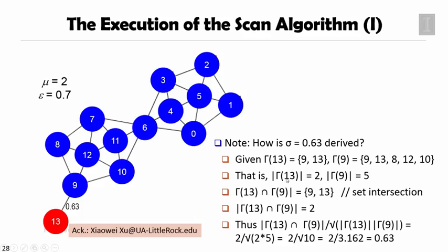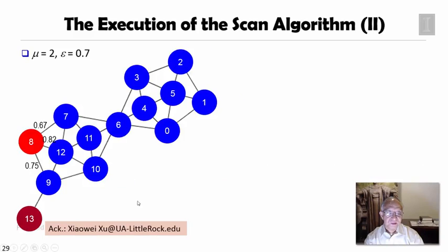13 has 2 neighbors, and 9 has 5 neighbors, including itself. Their intersection of their neighborhood is 9 and 13, because that's only what is common. If you look at their size, 9 and 13, the size is 2. Based on the formula to compute the sigma, the size is 2 times 5. Then you compute this, you get 0.63. In a similar way, you can compute the others.